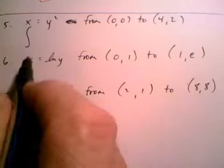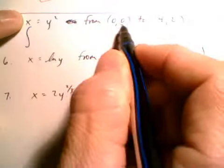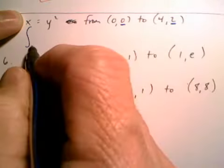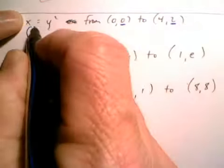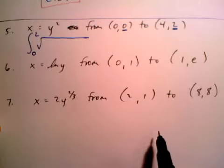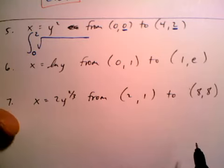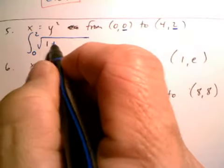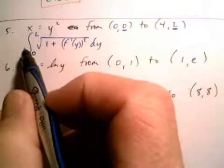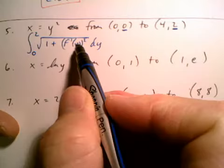If we're integrating with respect to y, then we're going to take the y coordinates. 0 to 2. Zero is the lower of the two and 2 is the higher. If you happen to get a negative number, then you probably should check your limits of integration. The formula holds true whether it's an x or a y. The formula for the length of a curve: integral from 0 to 2, radical 1 plus f prime of y squared dy.